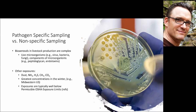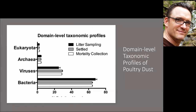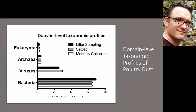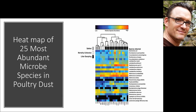Organisms aren't the only exposure in these work environments — there are other exposures like dust and gases that Dr. Anthony will talk about. Looking at the DNA we analyzed in these samples, the bottom three categories — archaea, viruses, and bacteria — are from microorganisms, and the majority of the DNA was from microorganisms. There were some eukaryotic DNA from animals or humans as well, but at a much lower proportion. This was among poultry dust samples.